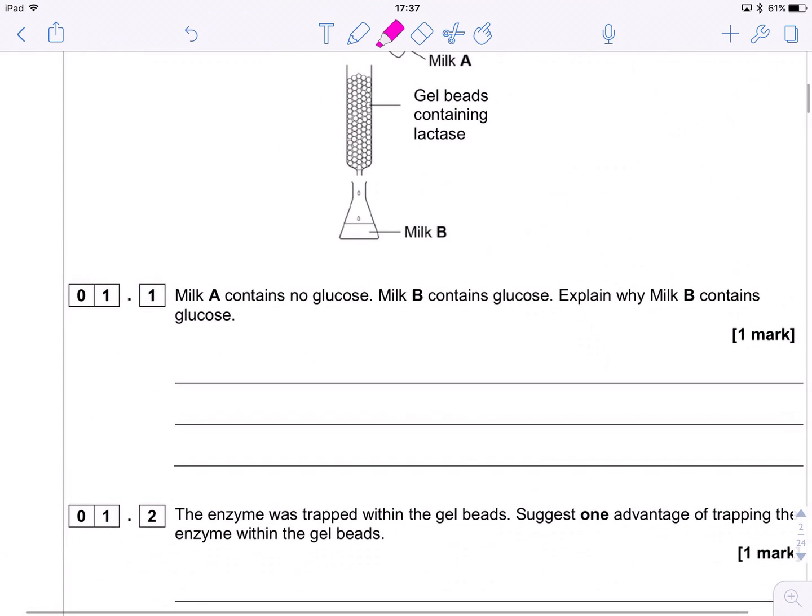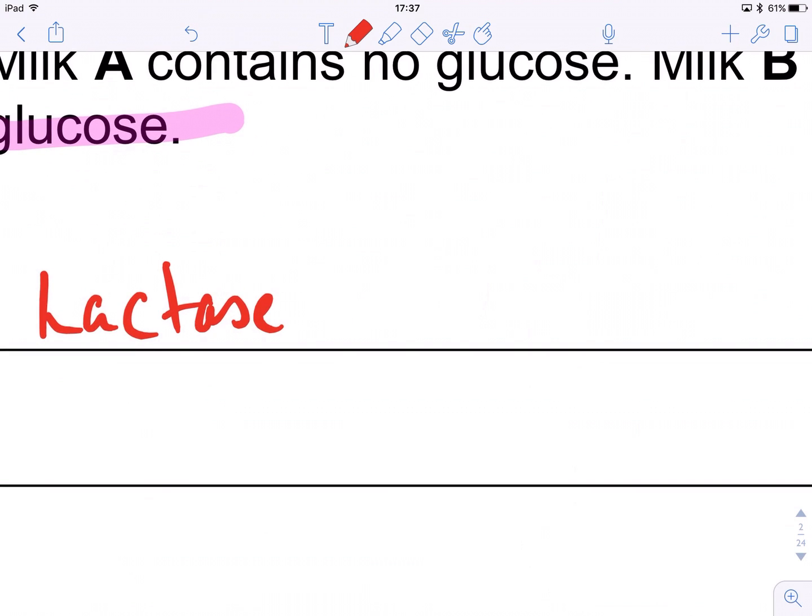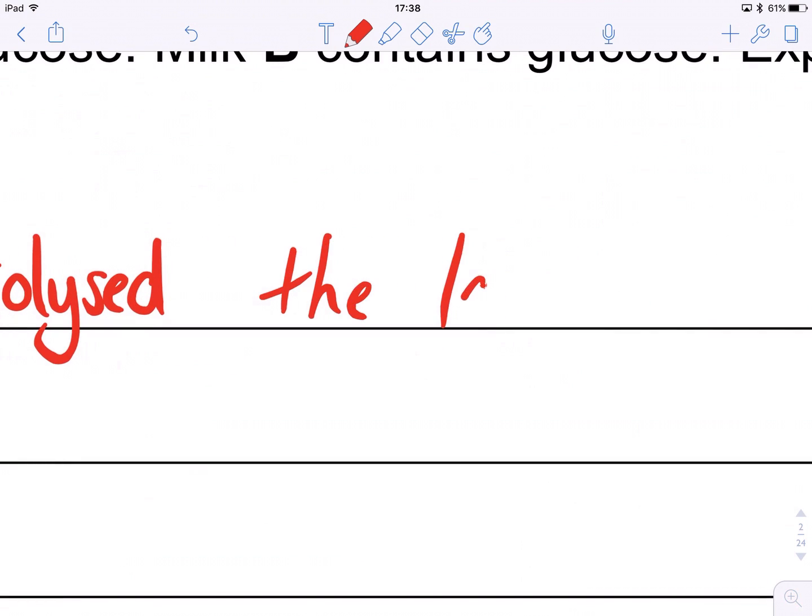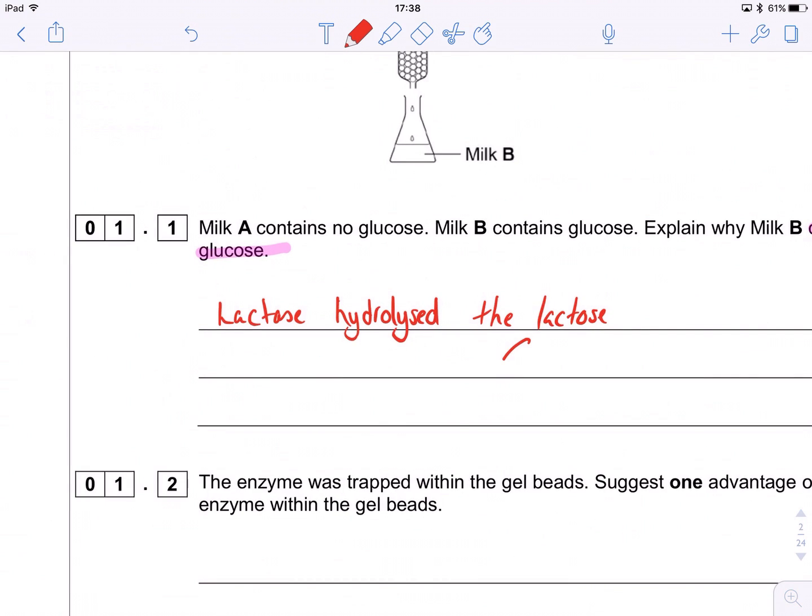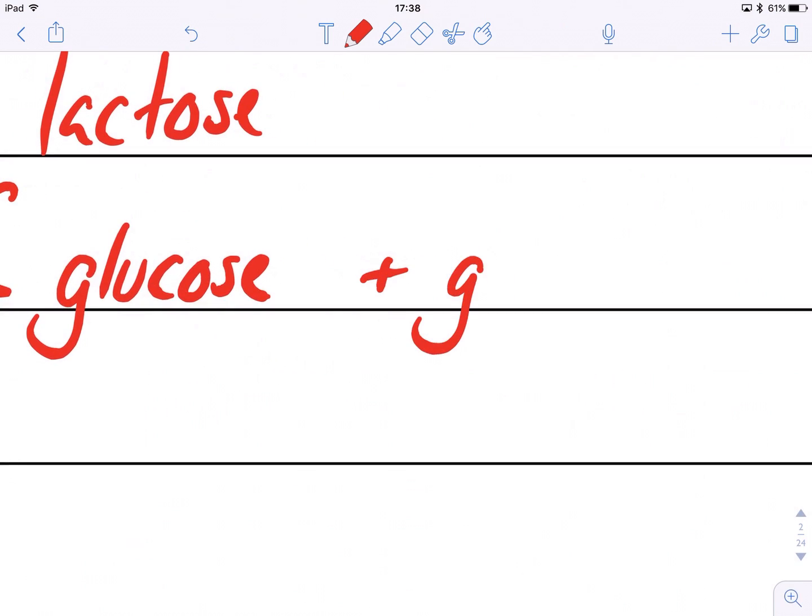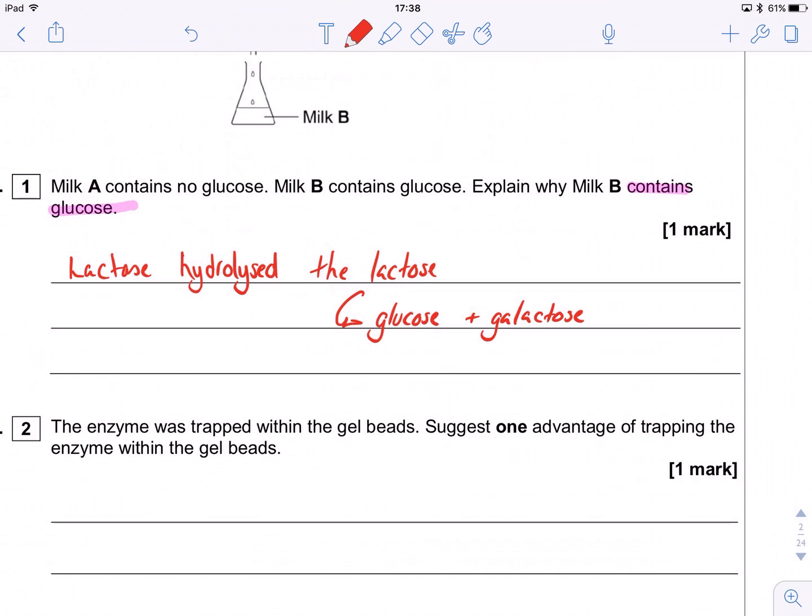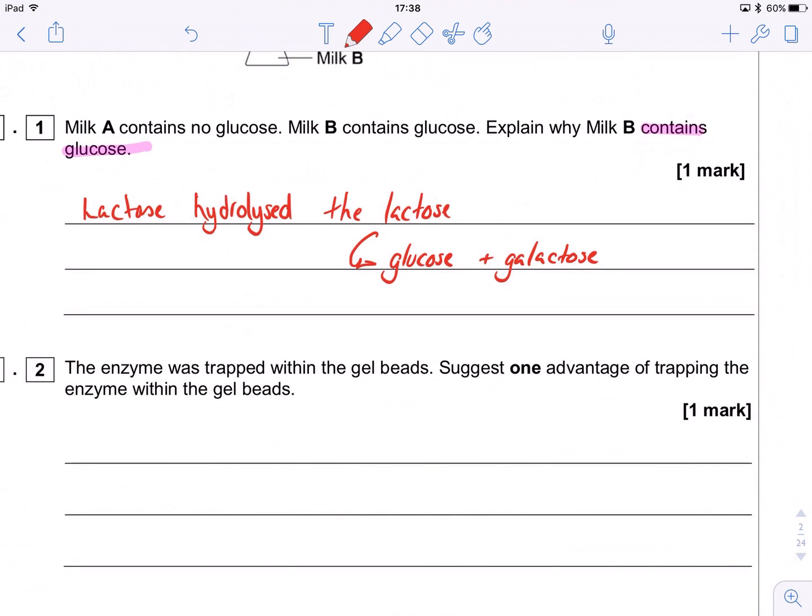So the first question is, why does milk A contain no glucose but milk B contains glucose? Well, all we have to say is that the lactase enzyme has hydrolyzed or broken down or digested the lactose, which is a disaccharide. And as a result of that hydrolysis, we get two monosaccharides produced. We get glucose, which is what the question's asking about, and more power to you if you remember that the other monosaccharide that comprises lactose is galactose. So that's where our glucose has come from. The enzyme has done its thing. It's hydrolyzed. It's broken down the glycosidic bond between the glucose and the galactose that make the lactose. And you get those two monosaccharides result. Nice, easy, one mark.